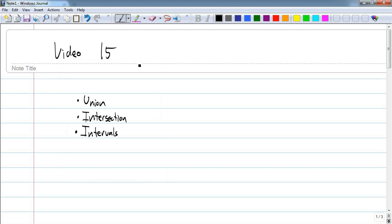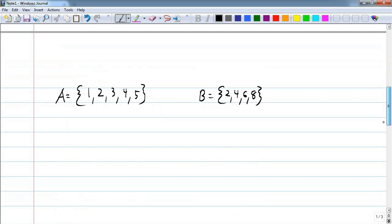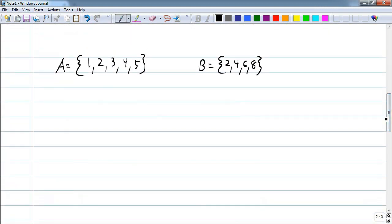So let's get started. Let's imagine that we have two sets. Set A consists of 1, 2, 3, 4, and 5, and set B consists of 2, 4, 6, and 8.